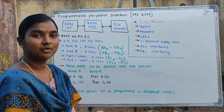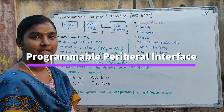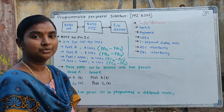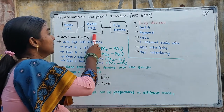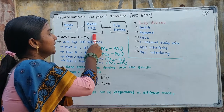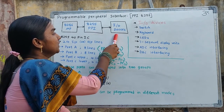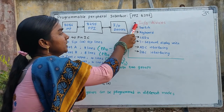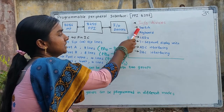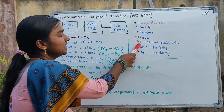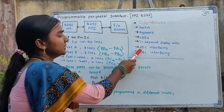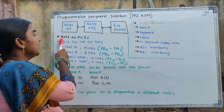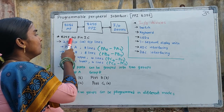In this session I will explain Programmable Peripheral Interface, in short we may denote it as PPI, and the IC we are going to use is 8255. By using this 8255 Programmable Peripheral Interface we can connect any input or output devices with the 8086 microprocessor. The input or output devices include switch, keyboard, LEDs, 7-segment display units, analog to digital converter interfacing, and digital to analog converter interfacing. This 8255 Programmable Peripheral Interface is a 40-pin IC.